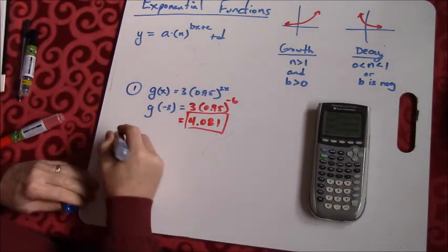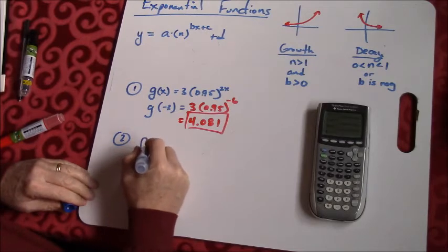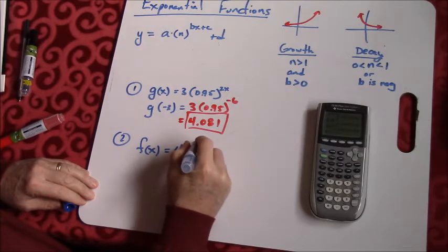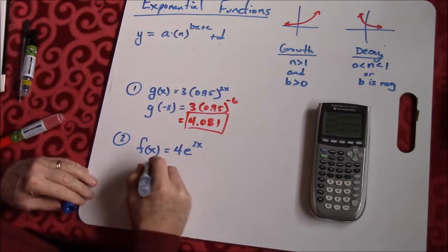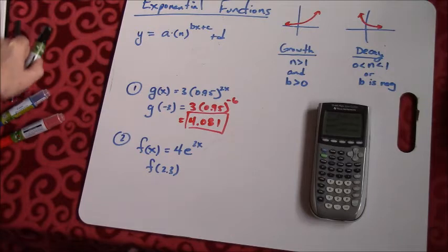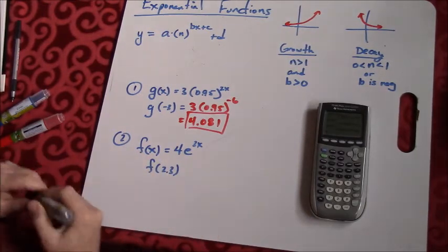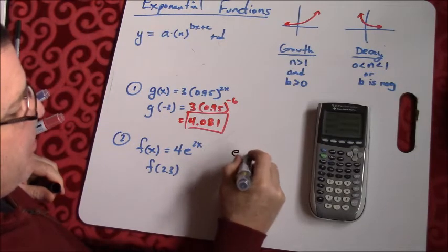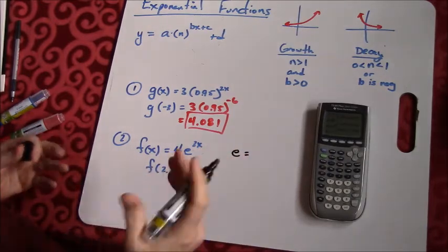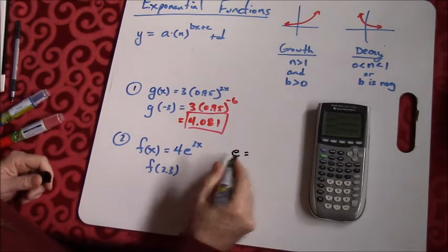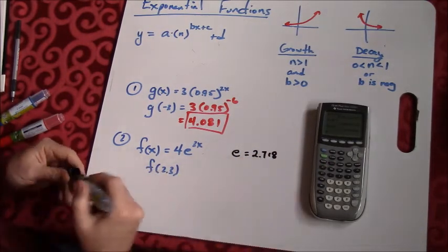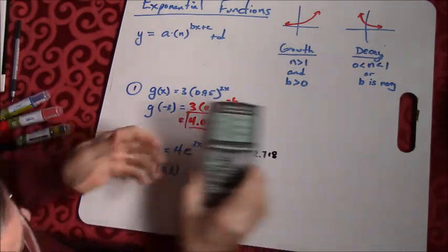Here's another one to try. This time I have f(x) equals 4e raised to the 3x, and we want to find f of 2.3. So let's talk about this thing right here for a second. E is a number that's kind of like pi. Pi is 3.14159 something. E is also a number. It's 2.718.